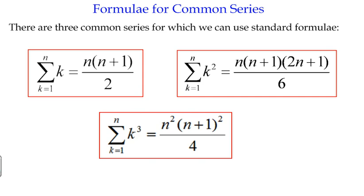Fortunately, we have formulae to help us with some of the most common summations, and that is sigma k, which is basically the sum of all the whole numbers from 1; sigma k squared, which is the sum of all the square numbers from 1; and sigma k cubed, which is the sum of all the cube numbers from 1.